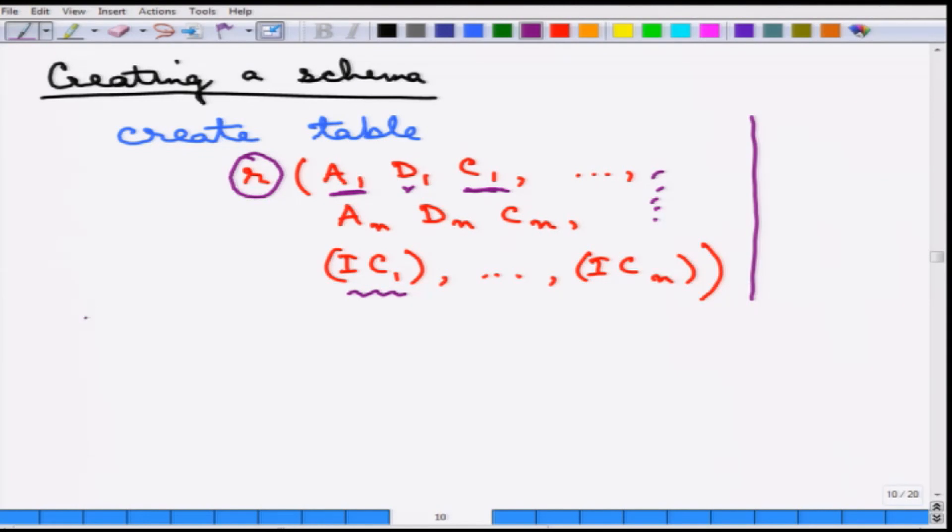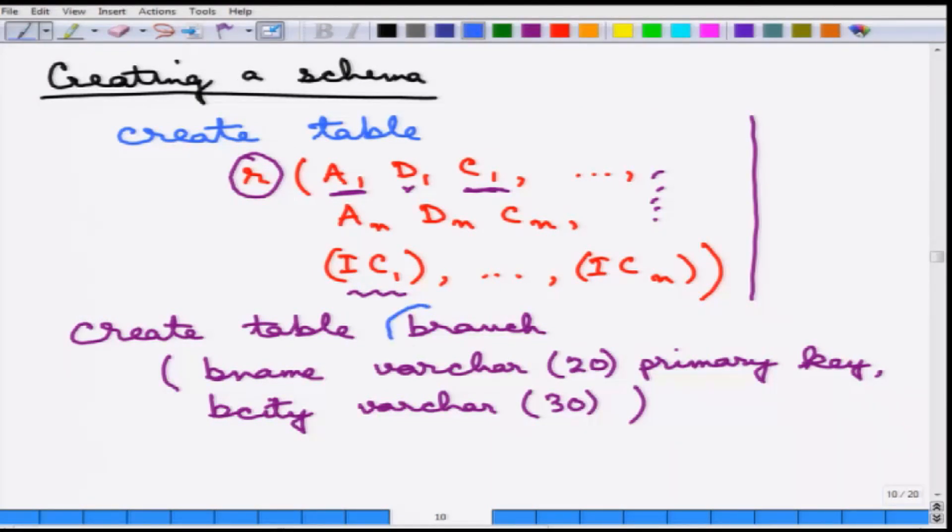For example, if we take an example from the earlier banking examples, create a table branch. The first attribute is called branch name. This is a character up to 20 length and this is the primary key of this table. Then you create another attribute called branch city which is again a string which can go up to 30 length. That's about create table.